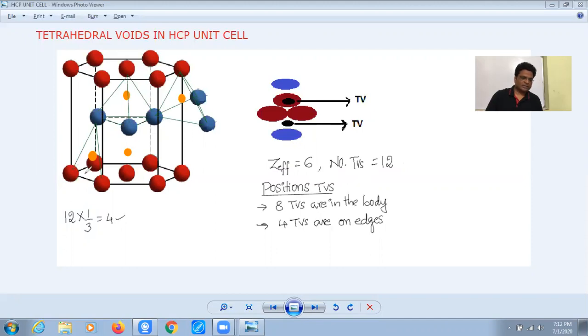This is the other position of tetrahedral void. These three atoms and this atom make one tetrahedral void below this and one above this. This is the other position of tetrahedral void.